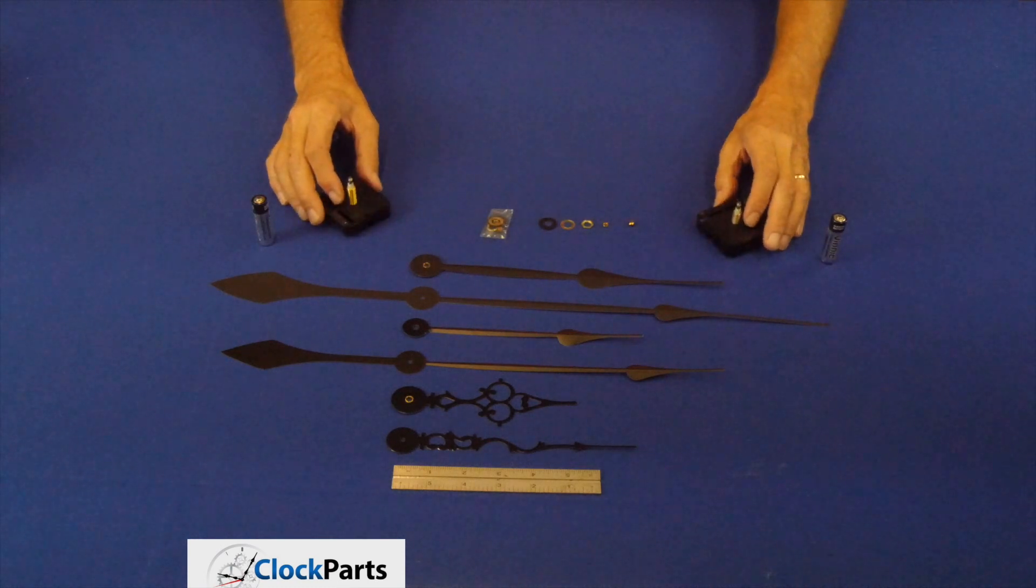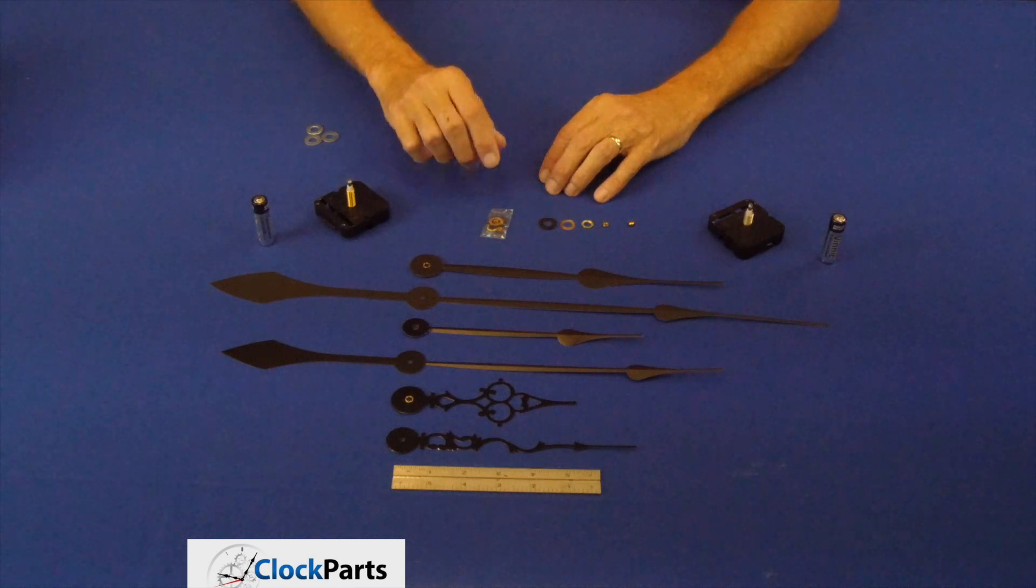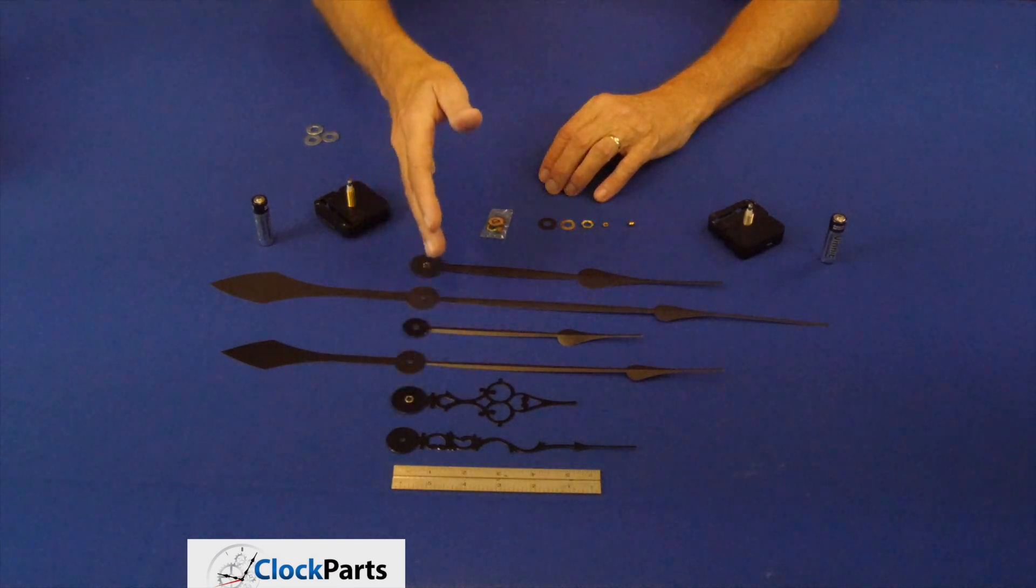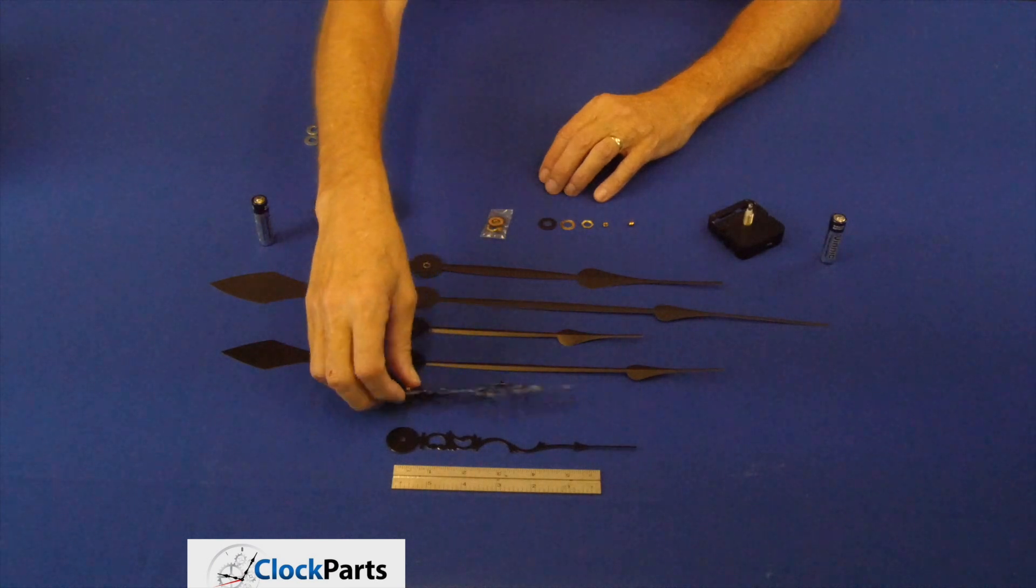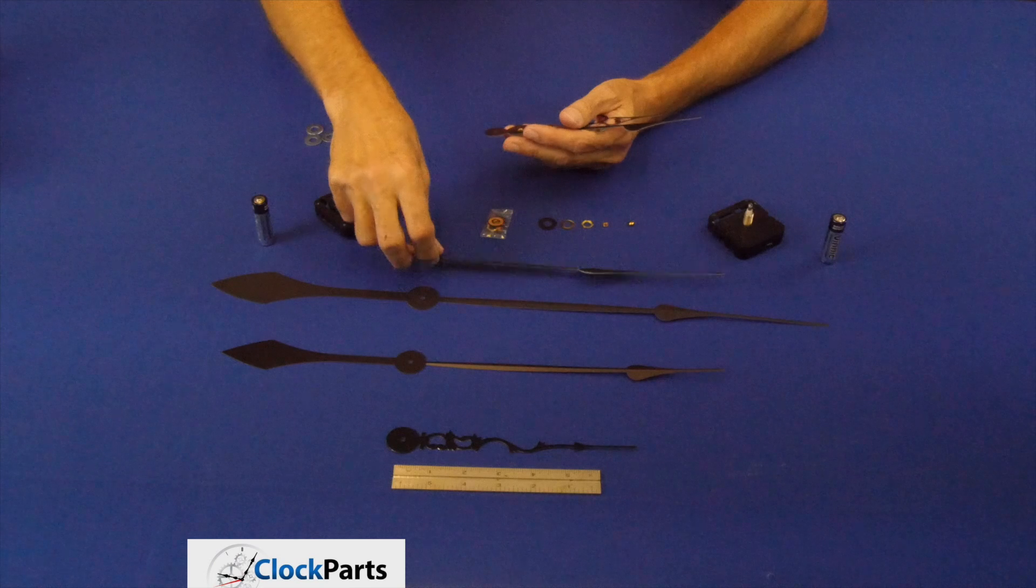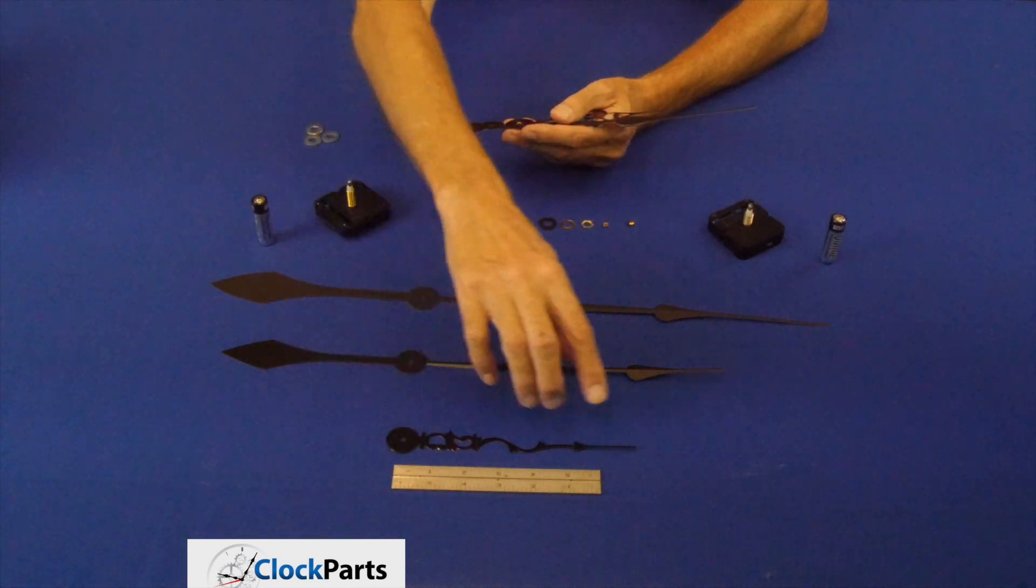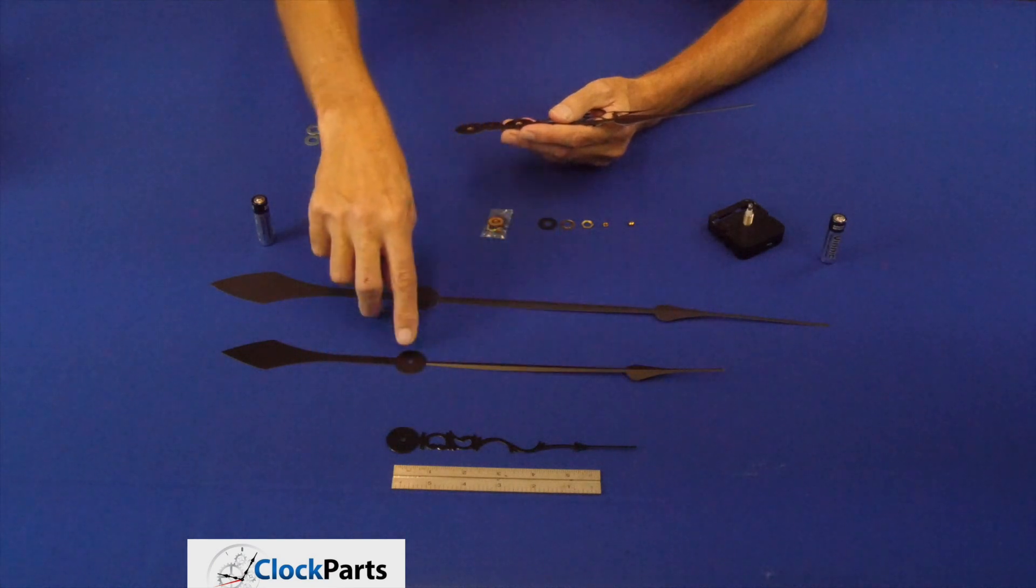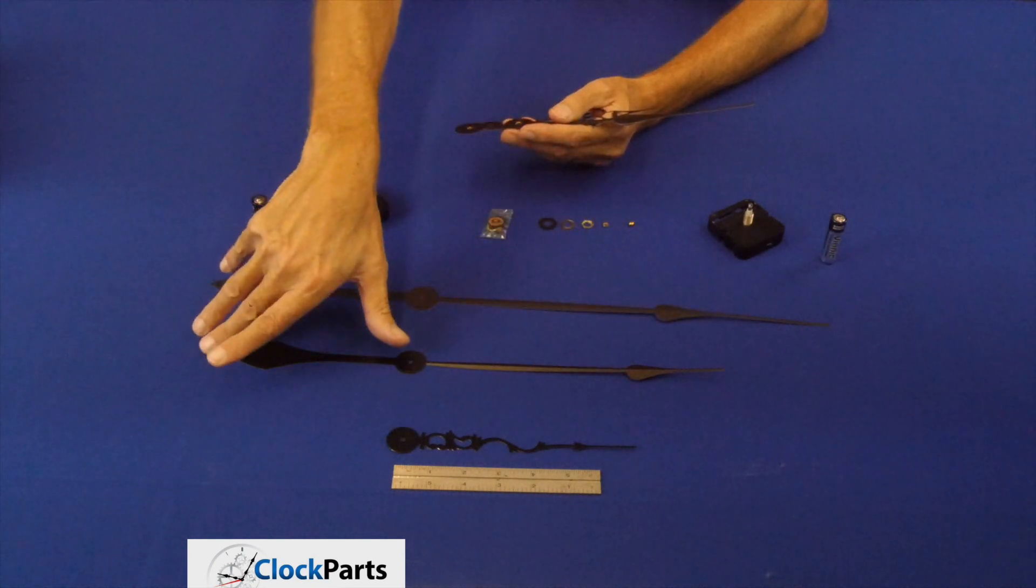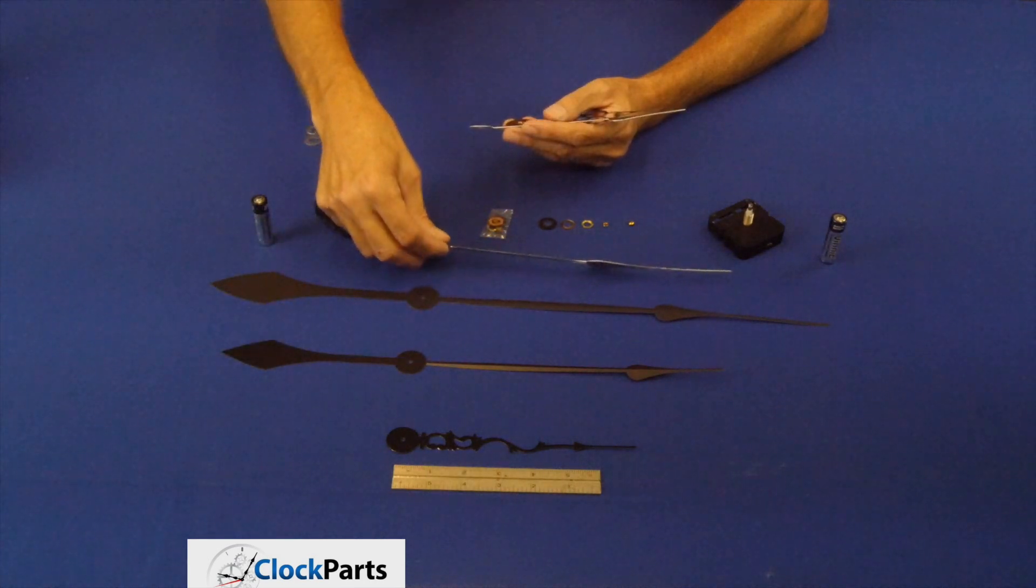When you're repairing a clock or building a new one, there's two key measurements. One is, how long are my clock hands? When you measure clock hands, your only concern is with the minute hand. And you measure a minute hand from the mounting hole to the tip. From the mounting hole to the tip. Never this tail part. That will give you the correct measurement for your minute hand.